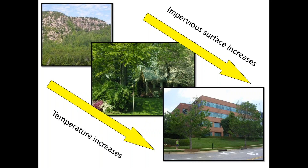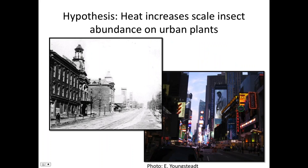If you've ever walked across a parking lot at a swimming pool barefoot, you realize the pavement is far hotter than the grass. What we've been working on in my lab is the hypothesis that it's actually the urban heat island effect that increases scale abundance on urban plants. I'll show you some of that today to give you an idea of how heat, stress, and other factors affect scale insects and how you may be able to mitigate those on a client's property or when installing new plants.